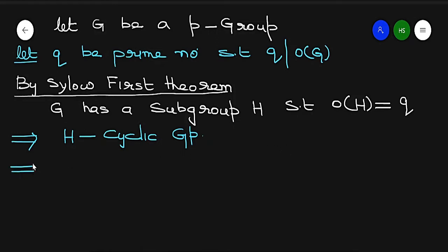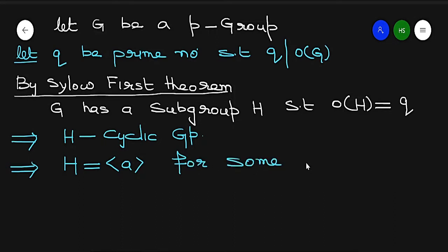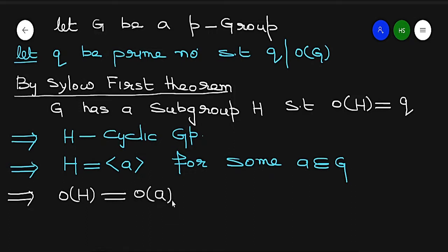Since H is cyclic, it is generated by some element — say a belongs to G. The order of the generator equals the order of the subgroup, which equals q.